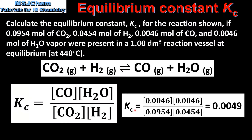Next we input the equilibrium concentrations of reactants and products. We multiply the concentration of the carbon monoxide by the concentration of the water vapor and divide that by the concentration of the carbon dioxide multiplied by the concentration of the hydrogen. This gives us a Kc value of 0.0049.